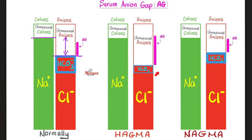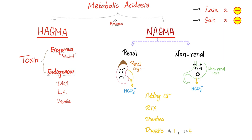What causes HAGMA? Basically, a toxin — could be exogenous, like alcohol and its forms: methanol, ethanol, ethylene glycol, etc. Or endogenous, something from within, like diabetic ketoacidosis, lactic acidosis, or uremic acidosis due to kidney failure. Acute or chronic renal failure will cause HAGMA. However, renal tubular acidosis causes NAGMA.